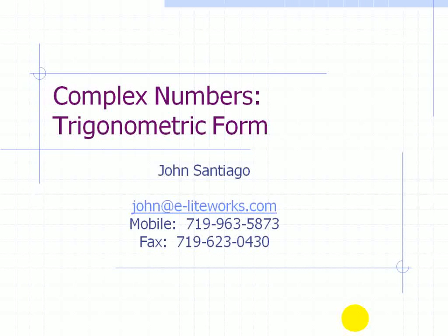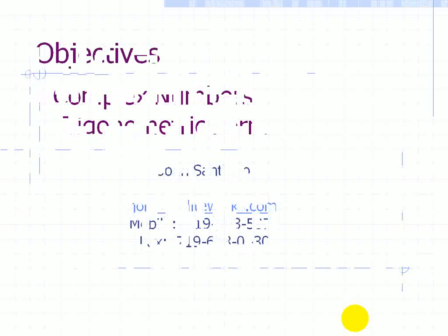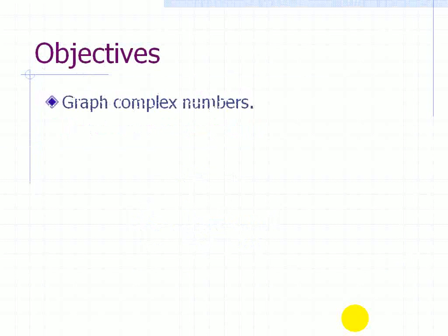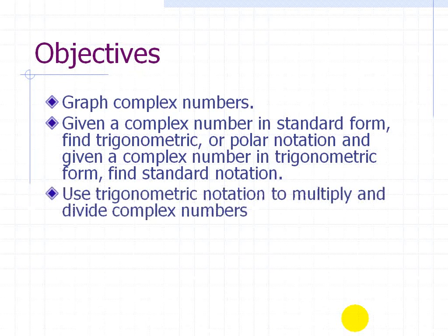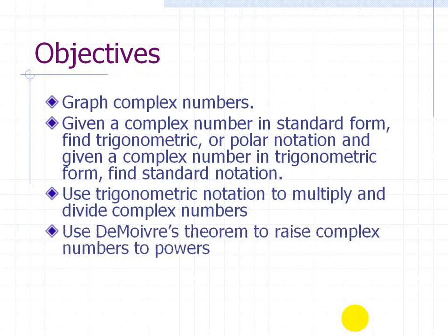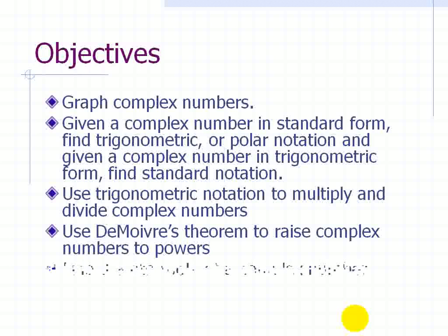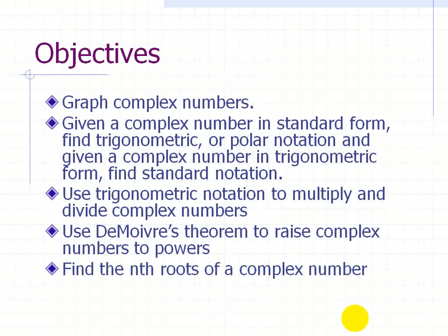Now we're going to take what we learned about complex numbers and how to represent these complex numbers in trigonometric form. The objectives are as follows: we want to graph complex numbers; given a complex number in standard form, find the trigonometric or polar notation; given a complex number in trigonometric form, find the standard notation; use trigonometric notation to multiply and divide complex numbers; use De Moivre's theorem to raise complex numbers to powers; and finally, take the nth roots of a complex number.